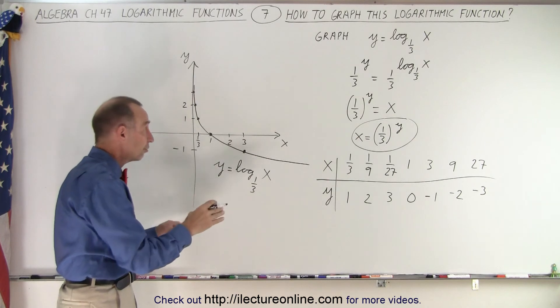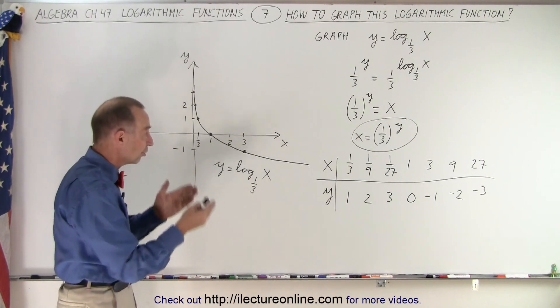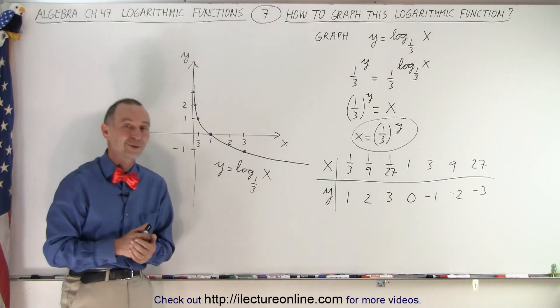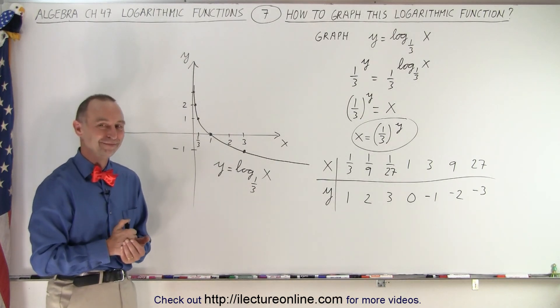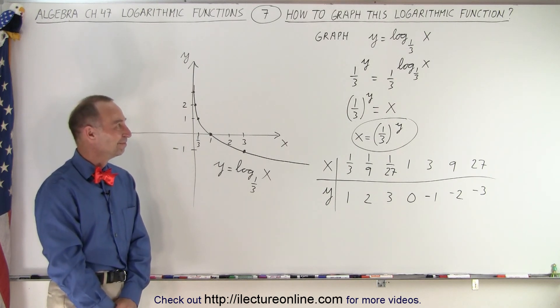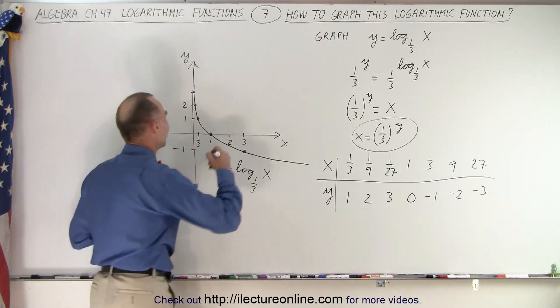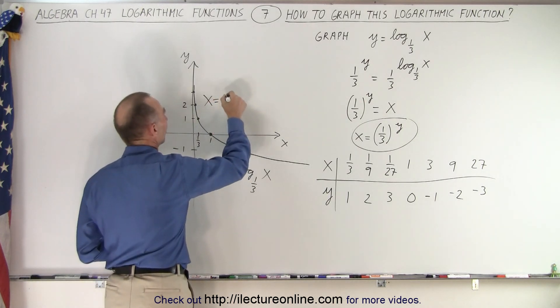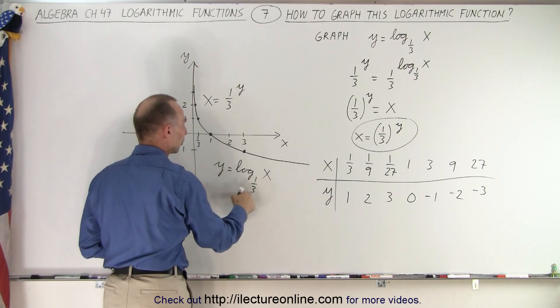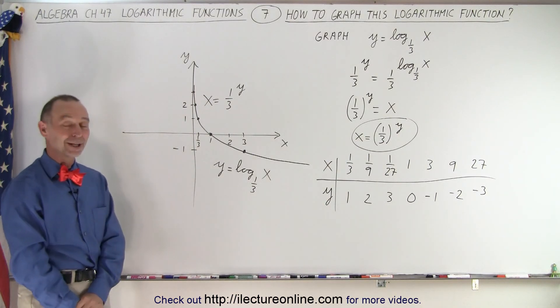And that is how you graph it. You first convert it to exponential form using the anti-log technique. Then you set up a table of values, and then you plot the points. Or you could just say that's the graph of x equals 1/3 to the y power. Yes, that's right. So this is x equals 1/3 to the y power, or y equals the log base 1/3 of x. Either one, it's the same thing.